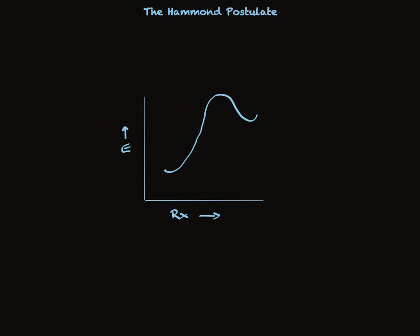The Hammond postulate is often used by organic chemists trying to understand how organic reactions happen to deal with the dilemma they face. What is the structure of the transition state? We need to know the structure of the transition state because it's the stability of the transition state that determines the activation energy.